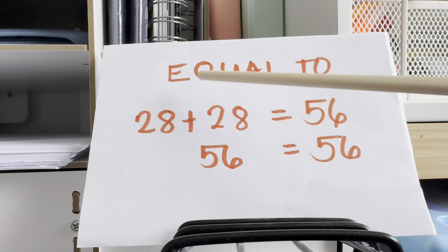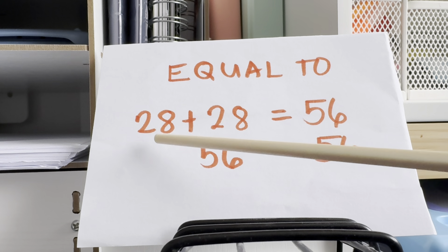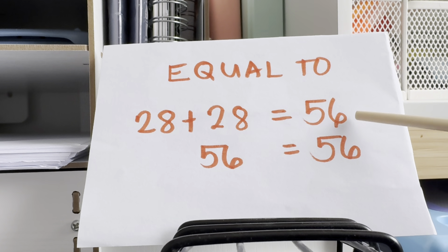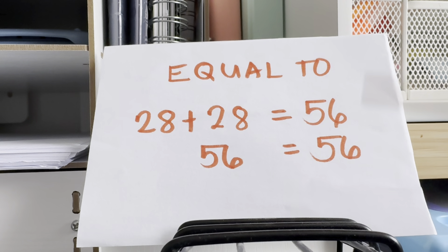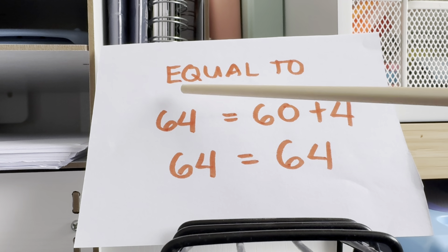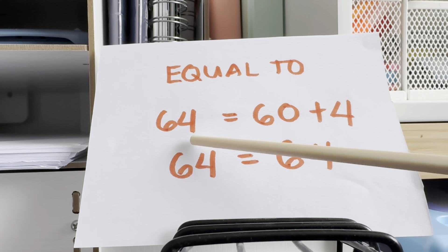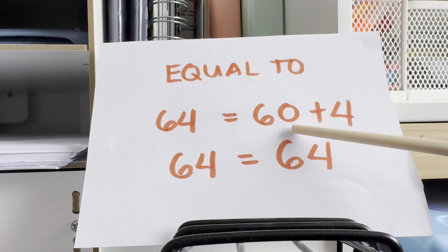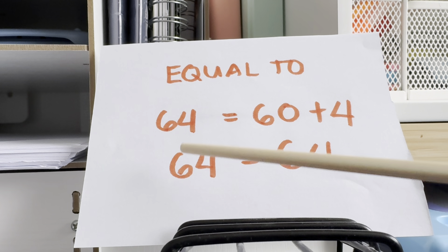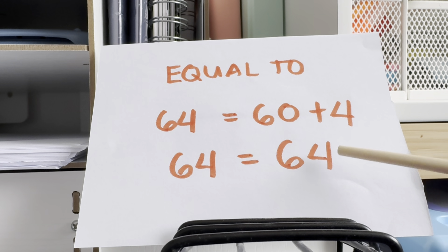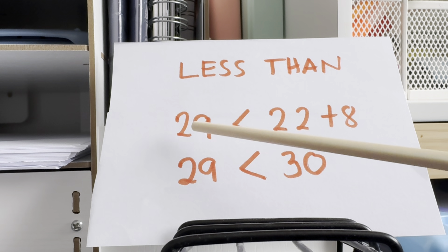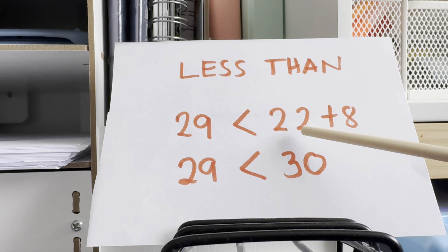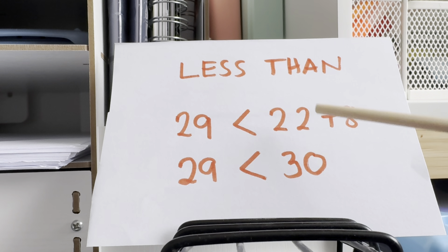Let's try another one. Equal to: 28 plus 28 is equals to 56; therefore, 56 is equals to 56. Another example, equal to: 64 is equals to 60 plus 4, or 64 is equals to 64. Less than: 29 is less than 22 plus 8, or 29 is less than 30.